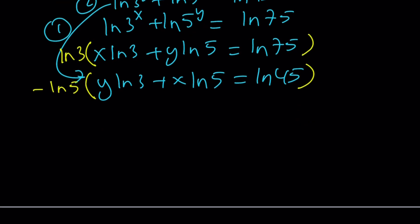And then from here, you get x times ln 3 squared plus y times ln 5 times ln 3 equals ln 3 times ln 75.